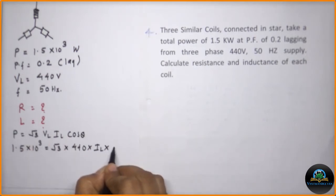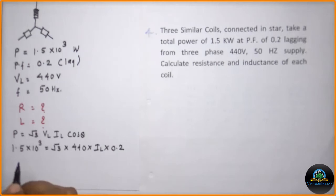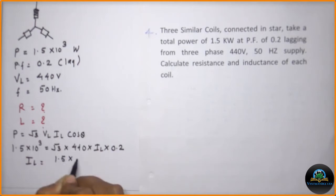By calculating this part we will be getting the value of IL, which is equal to 1.5 into 10 raised to 3 upon root 3 into 440 volt into 0.2.